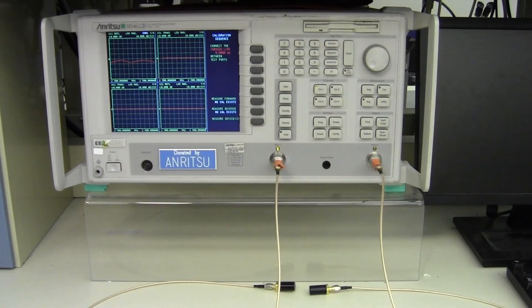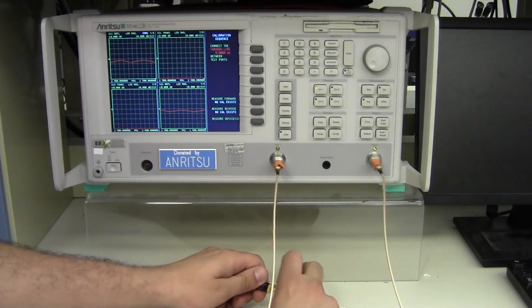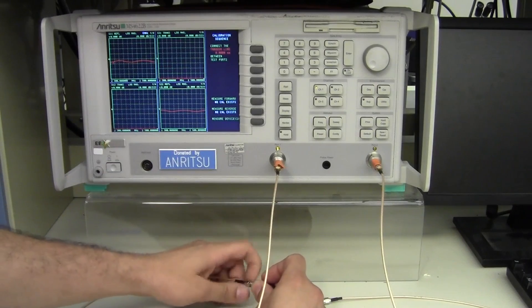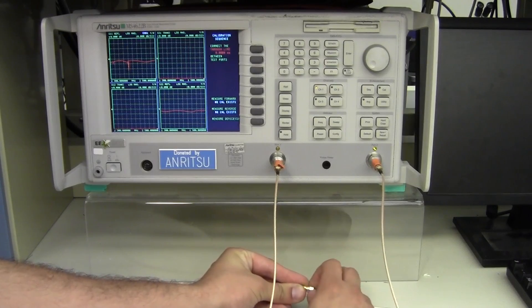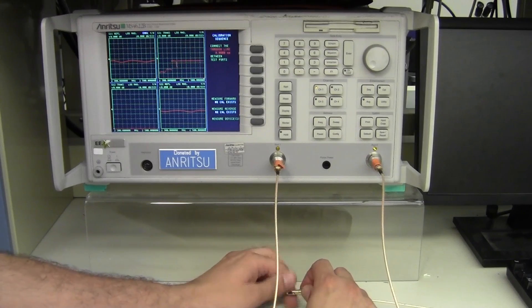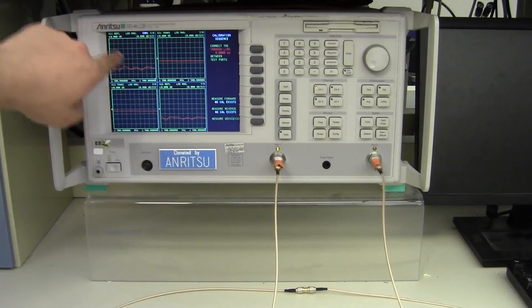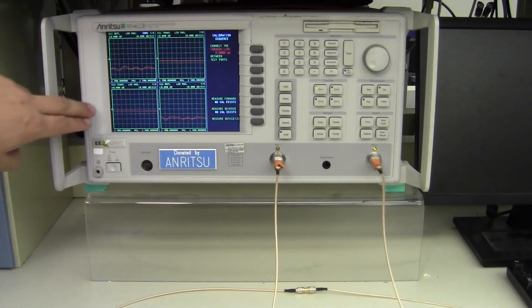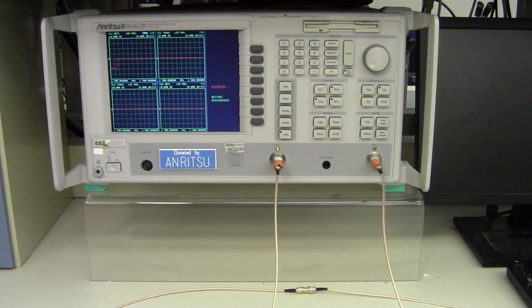And for the final step, it says connect the through line between test ports. In the calibration kit, in addition to the 50 ohm open and short terminations, it includes an SMA barrel jack, which is just two female connectors back to back. You'll notice that as soon as I screwed it in, the reflections on port 1 and port 2 have dropped, and the transmission has gone up quite a bit, since for the first time the two ports are finally connected. It will now ask it to measure these precise values.